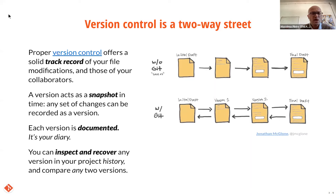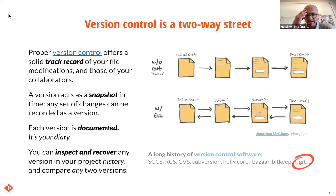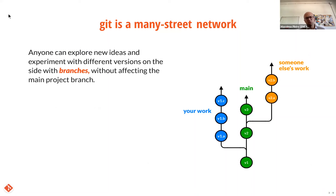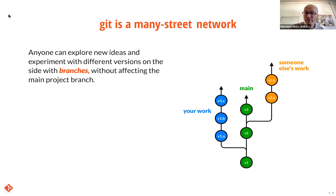Version control is not something that was born yesterday — it's been around for some time. But Git is the system we chose to introduce you to, which has emerged as the most reliable. Imagine you are developing your code through successive snapshots on a main branch, and at some point you think, maybe I have another idea. Without affecting your main work, you open what is called a branch — highlighted in orange — and you explore that idea. That doesn't affect your working code.